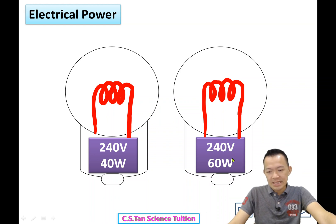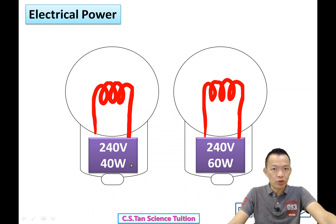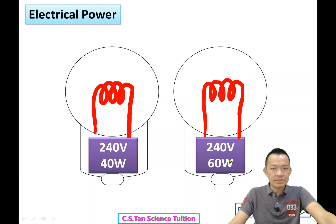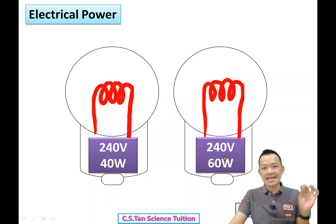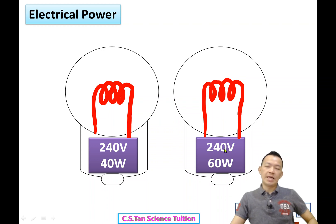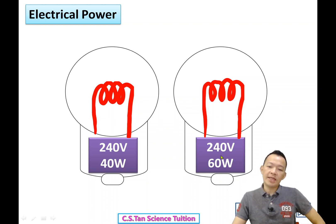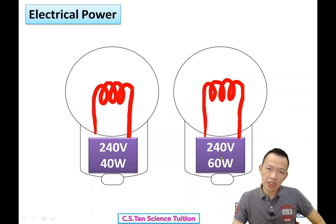Looking at light bulbs: 40-watt and 60-watt — what is the difference? Power is joules per second. 40 watts means 40 joules of electrical energy used per second. 60 watts means 60 joules used per second.